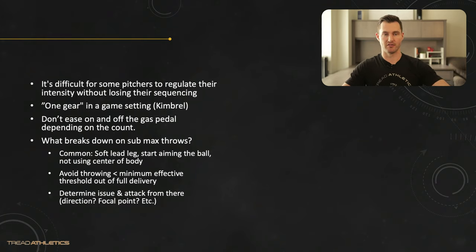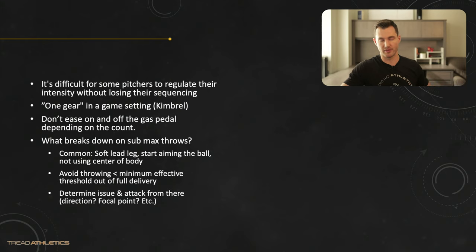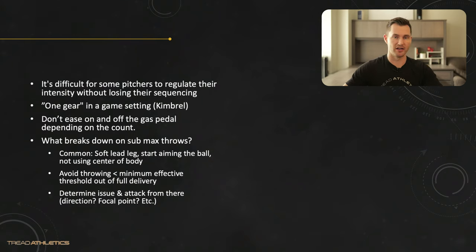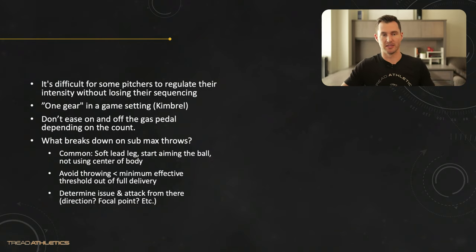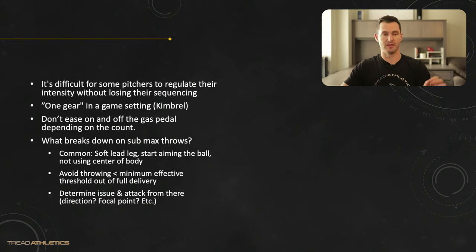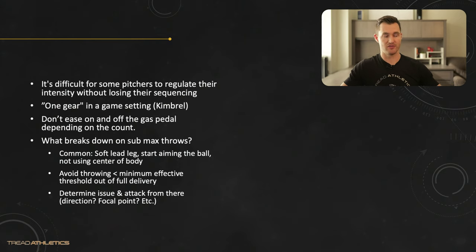I don't like to have guys throw out of their full delivery if they're under a certain minimum effective threshold. For me to actually feel like I can transfer energy through my lower half, through my lead leg and pelvis, the ball needs to come out over 75 mph. To throw under 75, I need to actively cheat my lower half to be soft, let my arm take over, and decelerate my torso early — that's just building bad mechanical habits. A really common reason is doing too much throwing out of your full delivery too early in rehab.